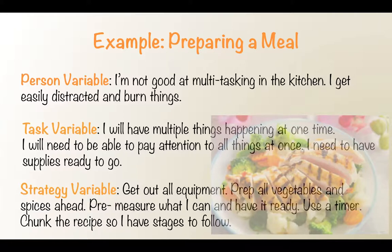Here's a life example. Let's say I'm having a dinner party and I perceive myself to be a terrible cook. The person variable is that I can't multitask in the kitchen — I know I get distracted and burn things. The task variable: I will have multiple things going at once to complete all three recipes and will need to be organized. The strategy: I'll get all equipment out so I'm not searching for things, chop and prep all the pieces, and use my timer so I don't forget anything on the stove. By thinking through all of this, my chances of being successful are far greater than if I had just jumped in haphazardly.